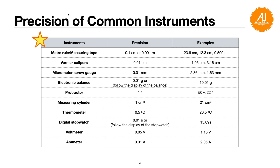The precision of some common instruments: first, a meter rule or measuring tape has a precision of 0.1 cm or 0.001 m, so for example 23.6 cm is 1 decimal place, or in meters it will be 3 decimal places, like 0.500 m. Watch out whether they want the answer in cm or meters. For vernier calipers, the precision is 2 decimal places in cm, so 0.01 cm — for example 1.05 cm or 3.16 cm.